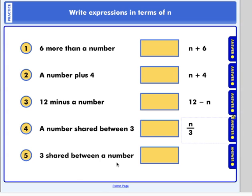Three shared between a number. That's kind of the opposite of this one. In this one, it's a number shared between three. This one is three shared between a number. See the difference? Great job if you were able to write expressions.